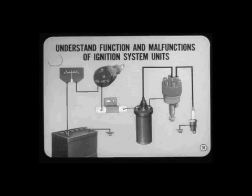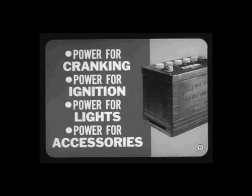Once you understand the function of each of the ignition system components, as well as the possible malfunctions of these units, you'll find it a lot easier to diagnose ignition troubles. So let's go through the system, one unit at a time. The battery is the source of electrical power for cranking the engine and operating the ignition system. It also provides the power for the lights and electrical accessories.